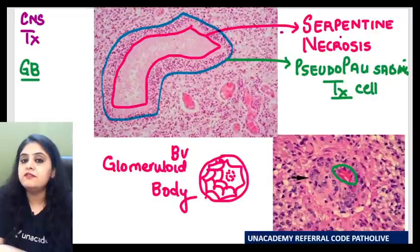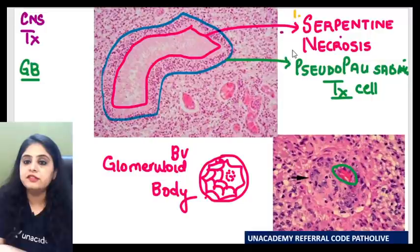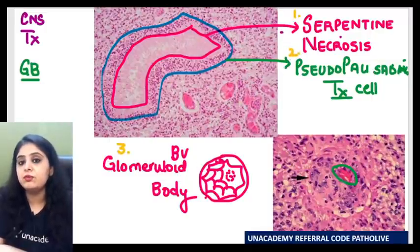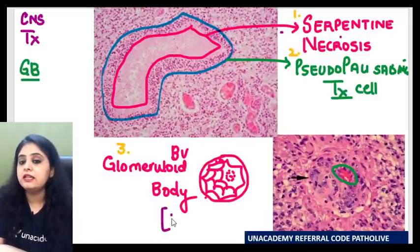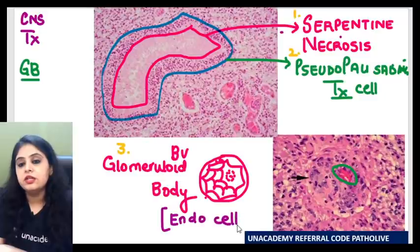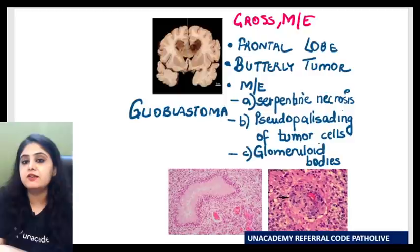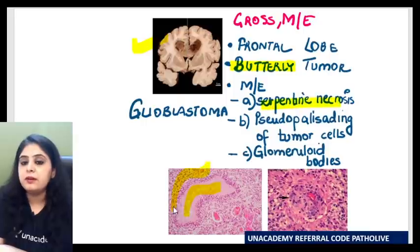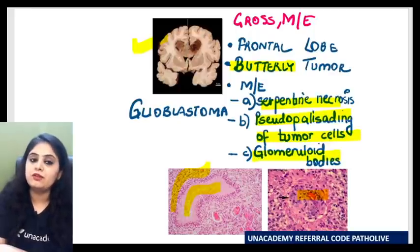Please remember the three features of glioblastoma. Number one: serpentine necrosis. Number two: pseudopalisading of the tumour cells. Number three: glomeruloid bodies, which are nothing but endothelial cell proliferation. To put it all together in a summary: it's known as a butterfly tumour, it shows serpentine necrosis, pseudopalisading of tumour cells, and the glomeruloid body.